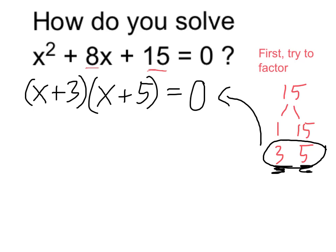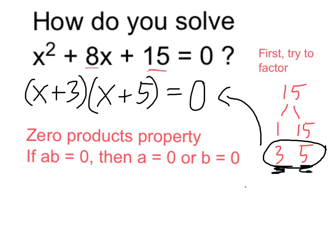Now this product of binomials is equal to the original. So now I can apply what's called the zero product's property, which tells me if one thing times another equals 0, then either the first or the second thing must equal 0.